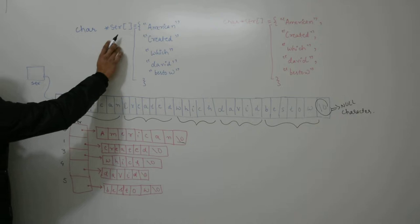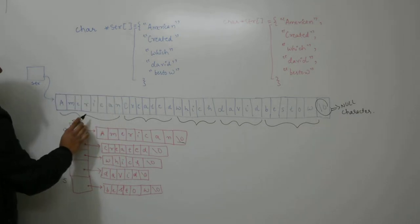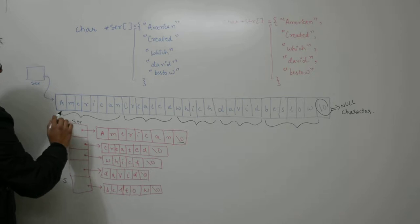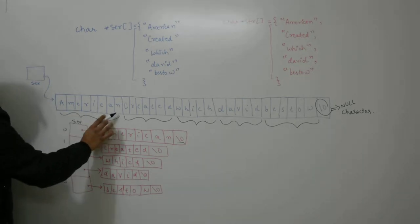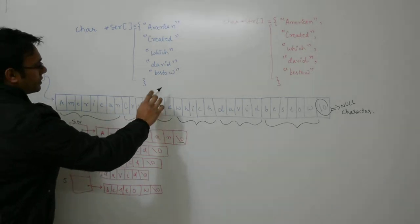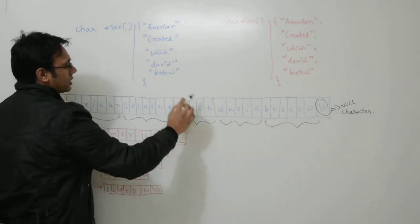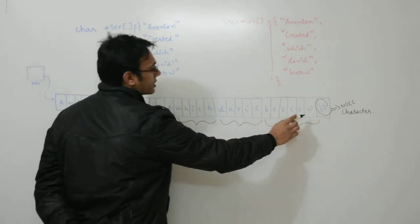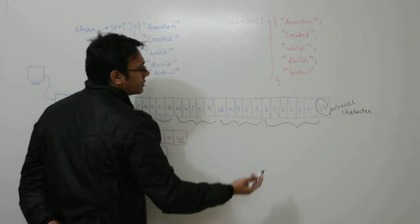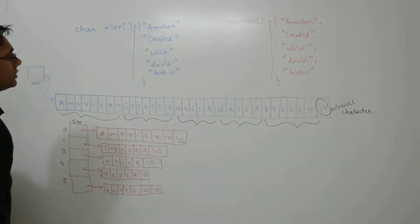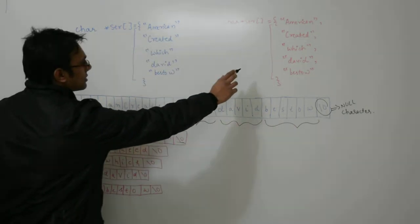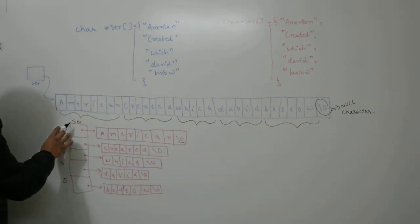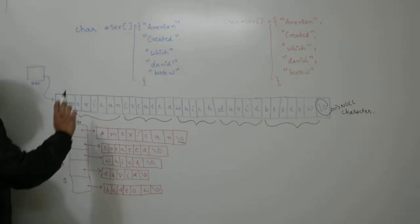In the first case, this statement is actually like this where str is pointing to an array where 'American' is at this location, 'which' is at this location, 'David' is at this location, and 'Buster' is at this location. After that we have another character identifying the end of this string. In this case, str is an array of pointers pointing to all these strings.